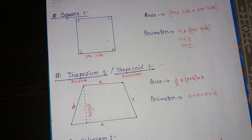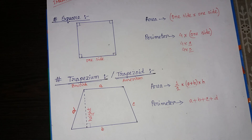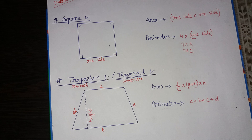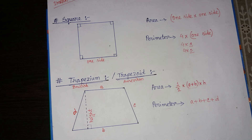We now know the important formulas for area and perimeter of all these figures. In the next tutorial I will discuss some mathematics of this chapter by using these formulas. Please like and comment on my tutorial to inspire me. See you in the next tutorial — thank you.